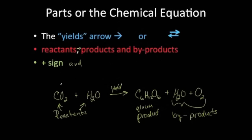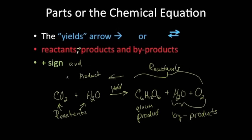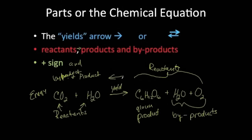The parts of a chemical equation: anything behind the arrow is the reactants; the products and byproducts are in front. There is also an energy source — in photosynthesis producing glucose, the energy source is the sun. If the reaction goes the other way, using oxygen to extract chemical energy from a glucose molecule, the energy given off is in the form of heat. The yields arrow basically indicates the direction of the reaction.